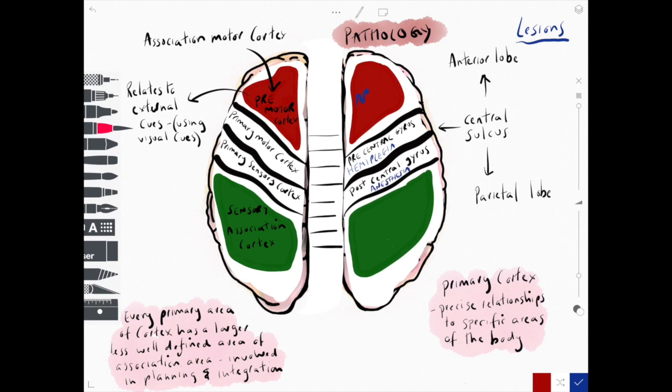If we get damage to the motor association cortex we have something known as apraxia.